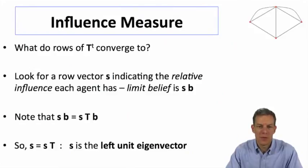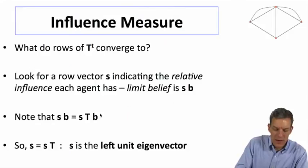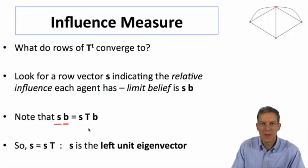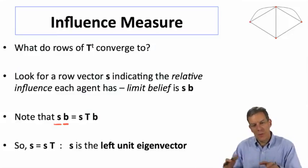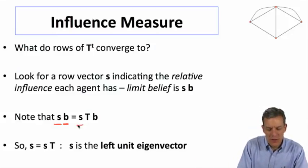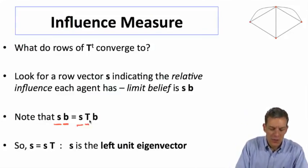Now, when we're looking at what this influence measure is, the way that we get to the fact that it has to be a unit eigenvector comes from the fact that we know, since it's a limit of doing all this updating, it would have to be the same thing as if we did one more updating. It shouldn't change the limit, and so it has to be that s equals sT.